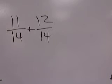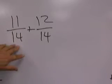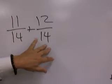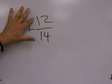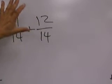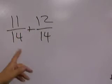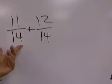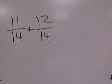We want to add this here. Notice that we have a common denominator. What if you simplified this fraction here down to 6 over 7? Then you wouldn't be able to add it, so we want to leave it as it is.